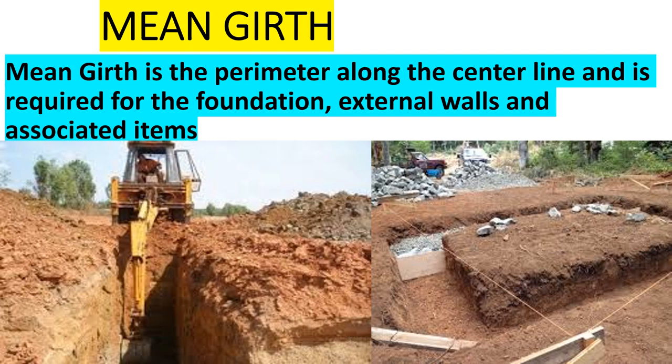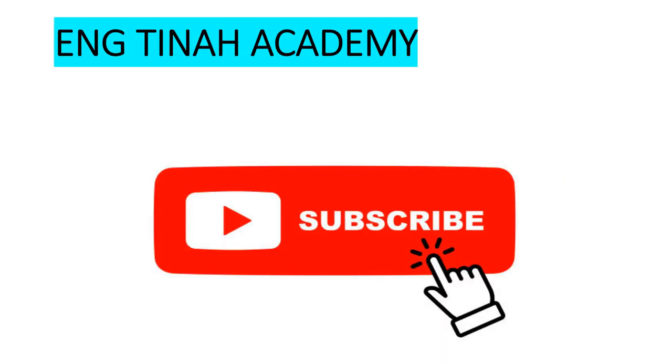What is mini gut and how do you calculate it? Welcome to my YouTube channel. In today's tutorial we are going to look at what mini gut is and how we calculate it for a house plan. Mini gut is the perimeter along the center line, and it is required for foundation — that is external walls and associated items. Most of the time when we want to do foundation excavation, we need to calculate the mini gut to get the volume for excavation.